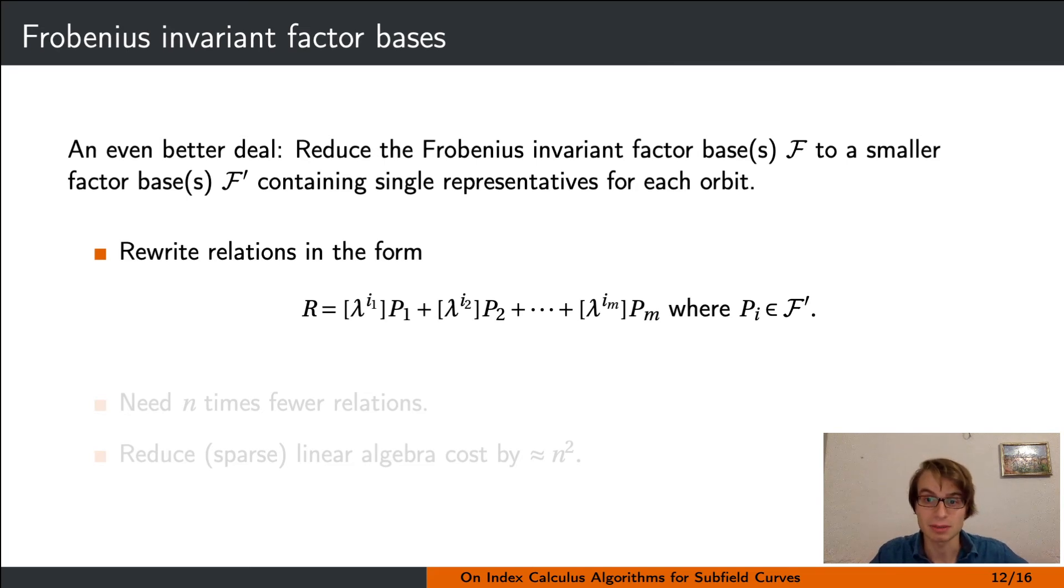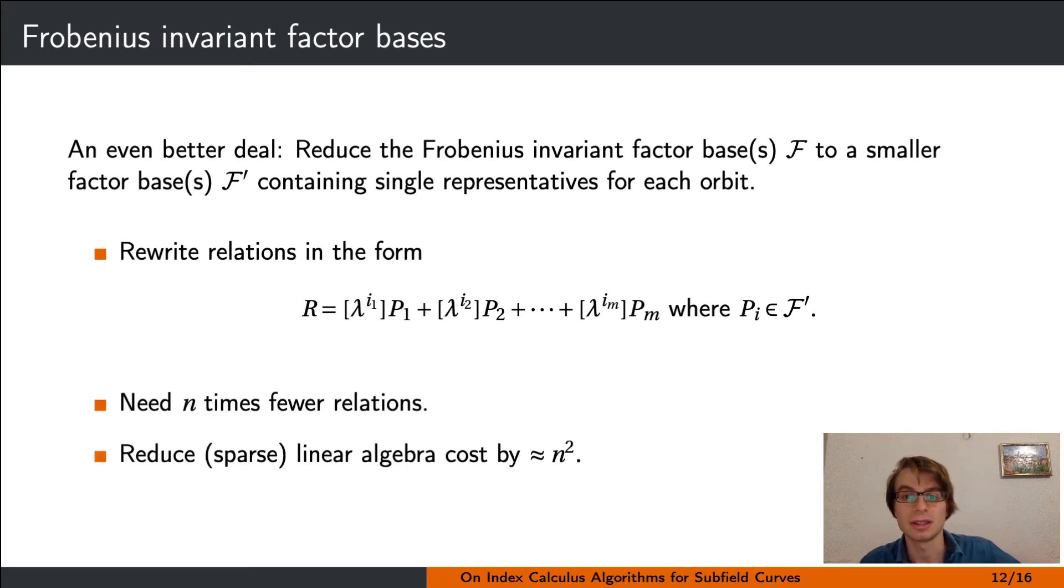This reduced factor base is n times smaller, which means that we need to find n times fewer linearly independent relations. And on top of that, the matrix for the linear algebra to compute the right kernel is of dimension n^2 times smaller. As sparse linear algebra techniques can be used for index calculus methods, this means that the speedup of the linear algebra step is up to a factor n^2.